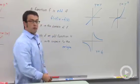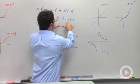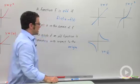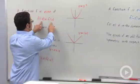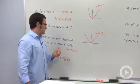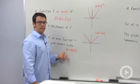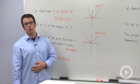So remember, odd functions, opposite inputs have opposite outputs. Even functions, opposite inputs have the same output. Even functions are symmetric about the y-axis. Odd functions are symmetric about the origin.